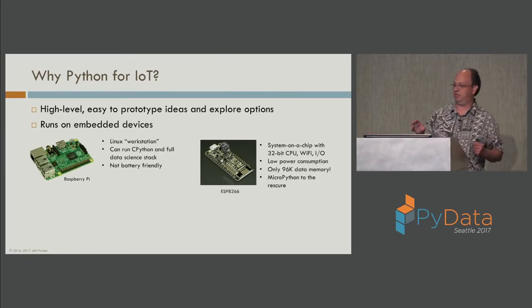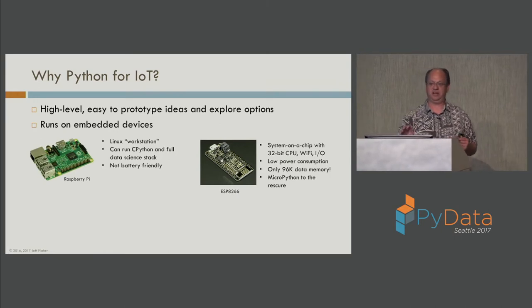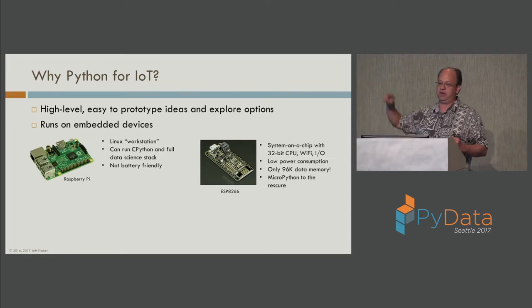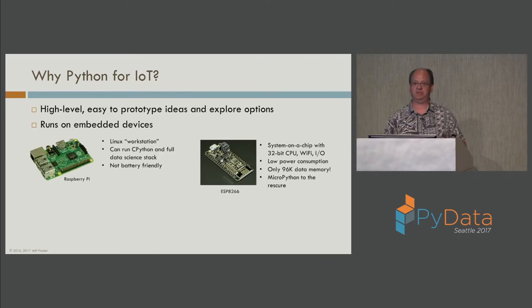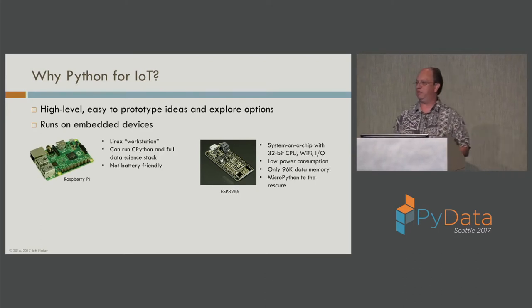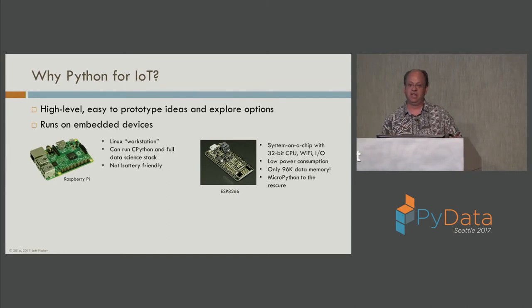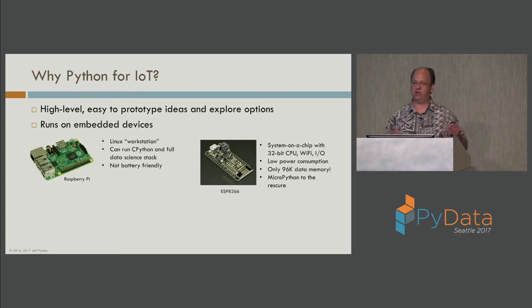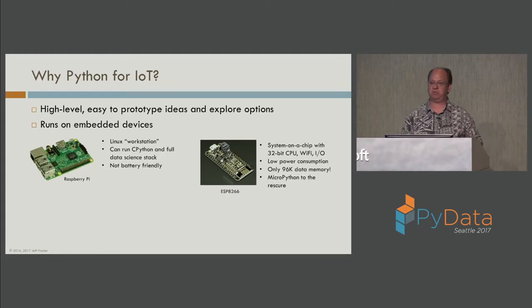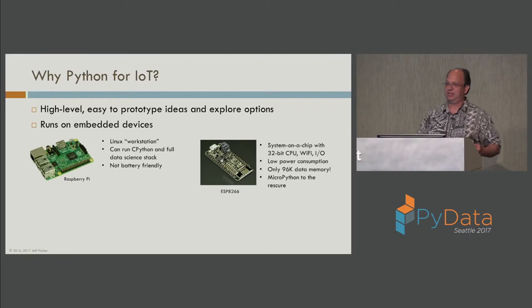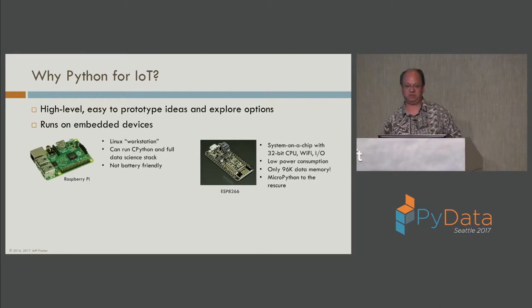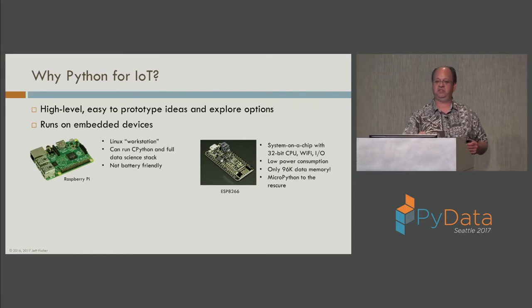The ESP8266 is also cheap. This particular board from Adafruit was about $16. There's also a spec developed by the Lua programming language community called NodeMCU, and you can buy implementations on Amazon for about $8. If you're willing to wait for shipping from China, you can get them for about $4 each, sometimes as low as $3.50. So they're really cheap — if you screw something up, just pull out another one. We're going to use both the Raspberry Pi and the ESP8266 in this project.